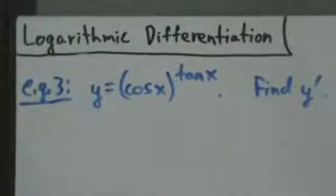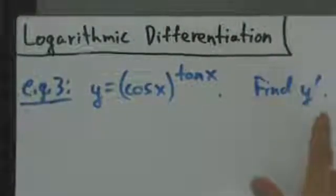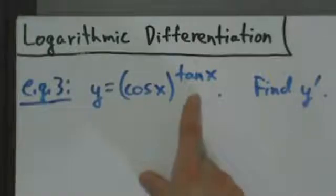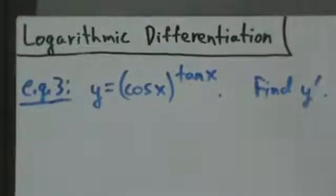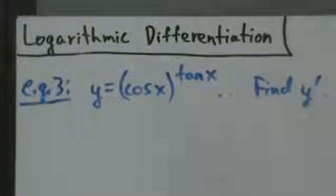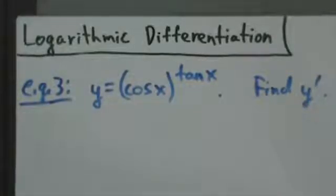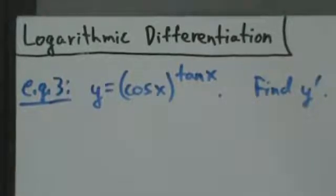Here's example three with logarithmic differentiation. We want to find y prime, and we're given that y equals cosine of x raised to the tangent of x. That's an extremely strange function, one you're not really likely to encounter ever, but it's good to see how stuff like this works because it's going to be a little more complicated than what we've done before. Working through this will help you see how the process works for something more complicated.